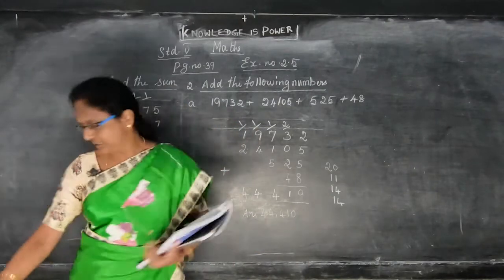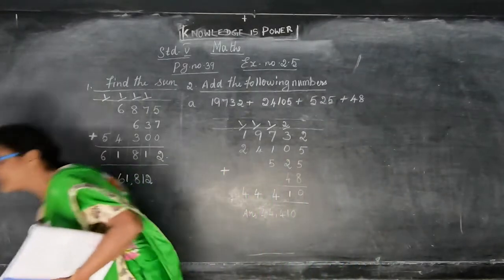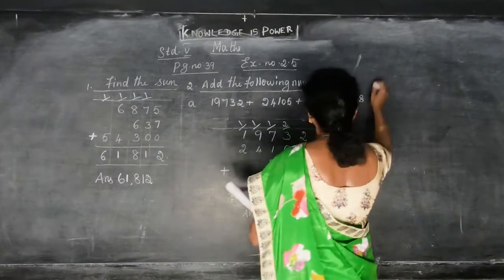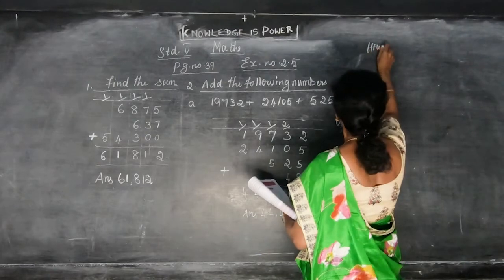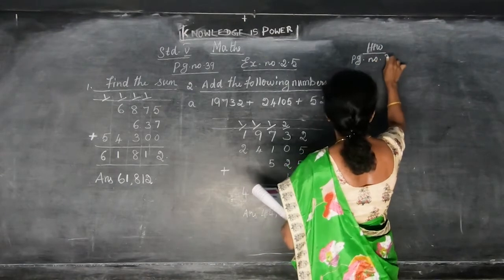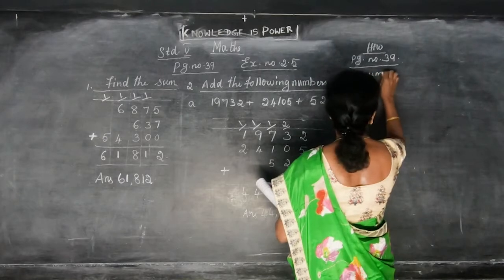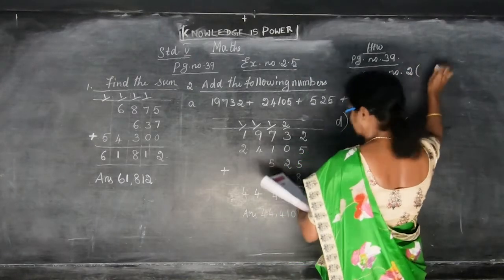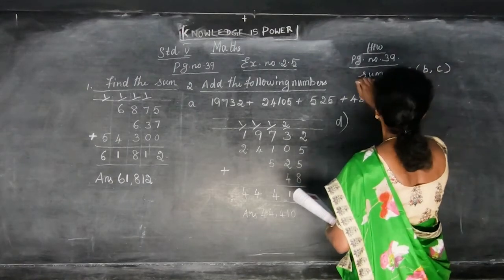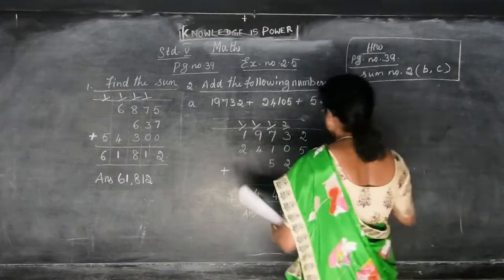Okay. Like this, you have to do all the sums according to the digits. Now I will do the D sum. The homework is page number 39, sum number 2 — you can do B and C. B and C — this is the homework for you. D sum I will do.